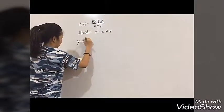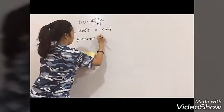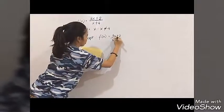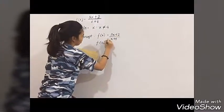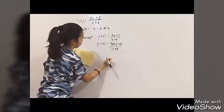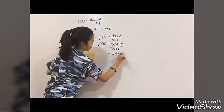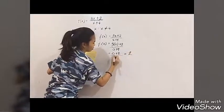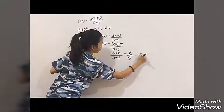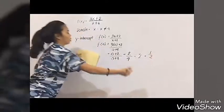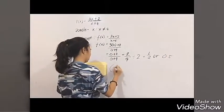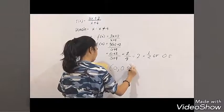Now let's proceed in finding the y and x intercept. In finding the y intercept, we need to substitute the value of x as 0. So f of x equals 3x plus 2 over x plus 4. Substituting x as 0: f of 0 equals 3 times 0 plus 2 over 0 plus 4. That gives us 2 over 4. Reduce it and you get 1 half, or 0.5. So the y intercept as an ordered pair is (0, 0.5).